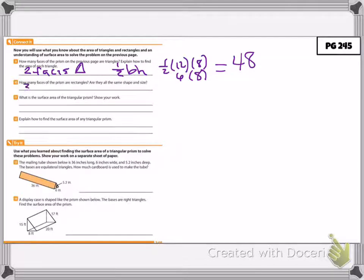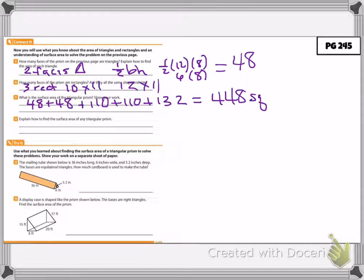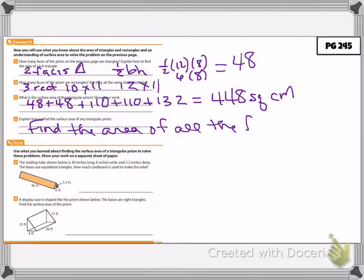There are rectangles that are 10 by 11 and one that is 12 by 11. What is the surface area of the triangular prism? We add them all up: two triangles that are 48, plus two rectangles that are 110, plus one rectangle that is 132, giving a total of 448 square centimeters.